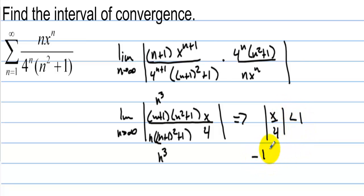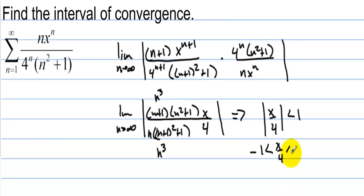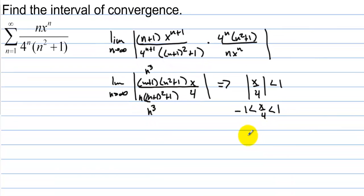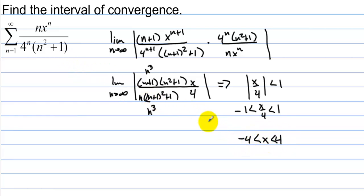So negative 1 is less than x over 4 is less than 1, which gives us negative 4 less than x less than 4. Now we have the interval of convergence, and this converges absolutely from negative 4 to 4 so far. Let's test the endpoints.